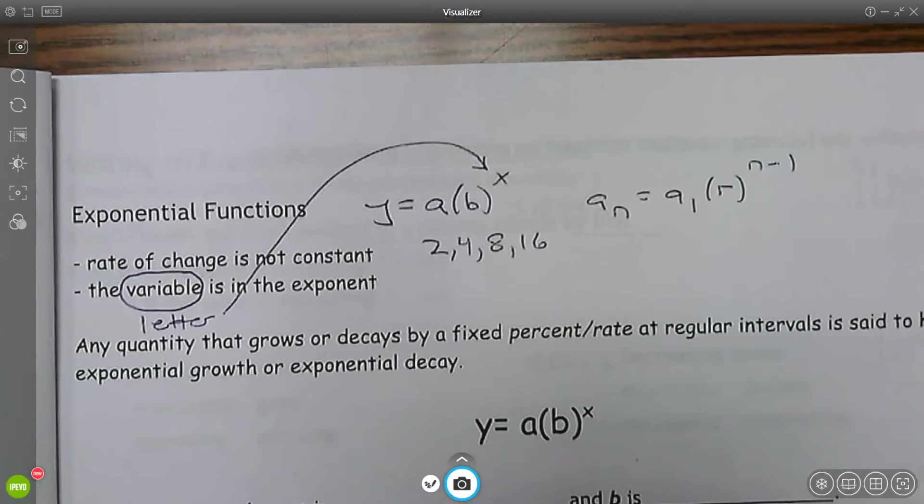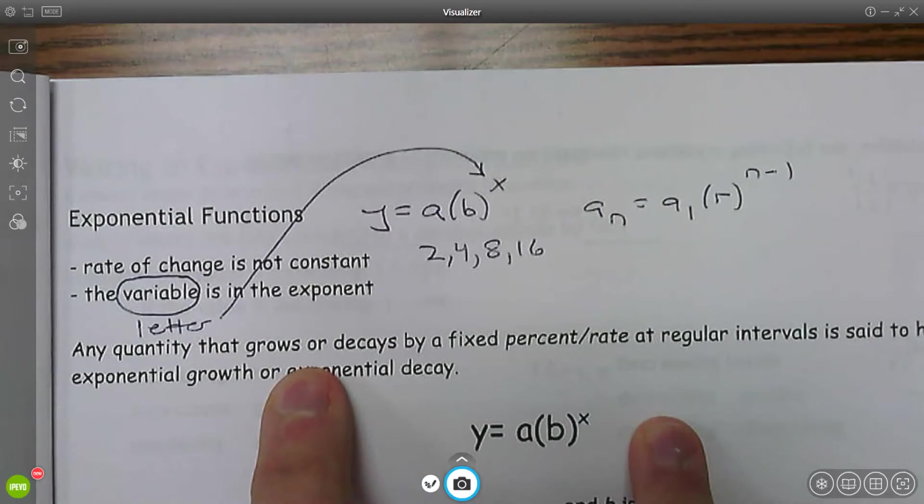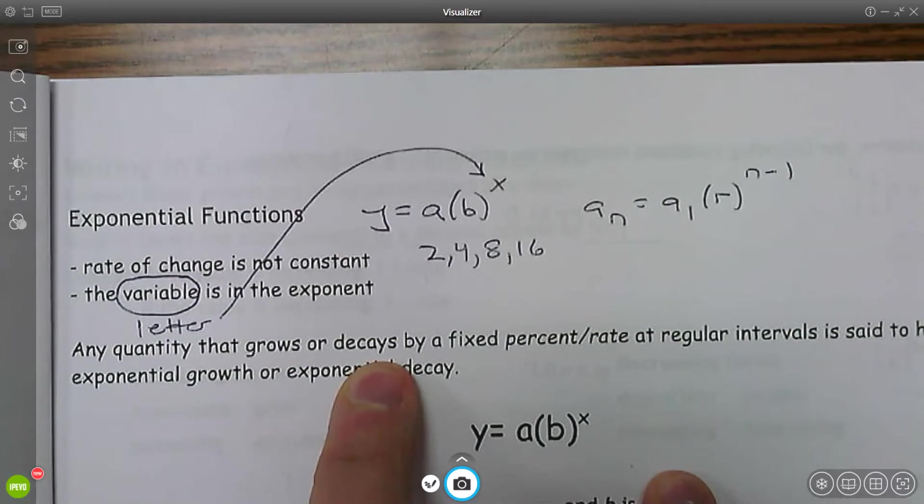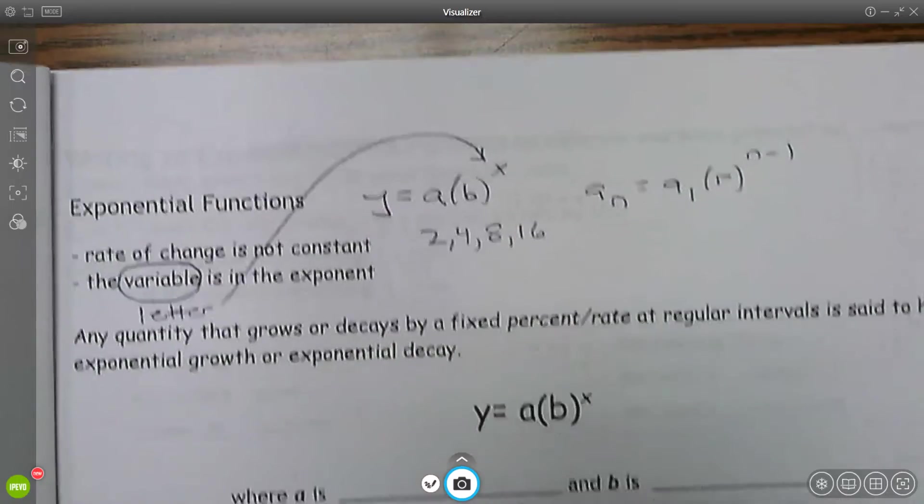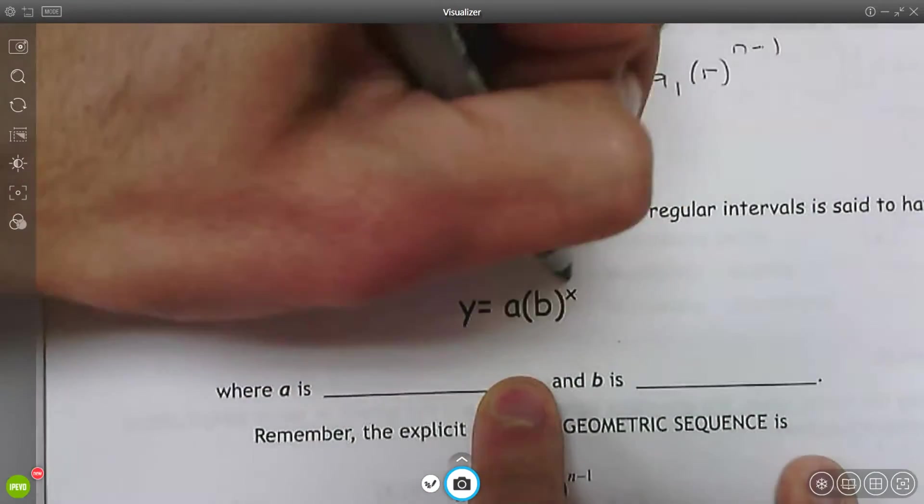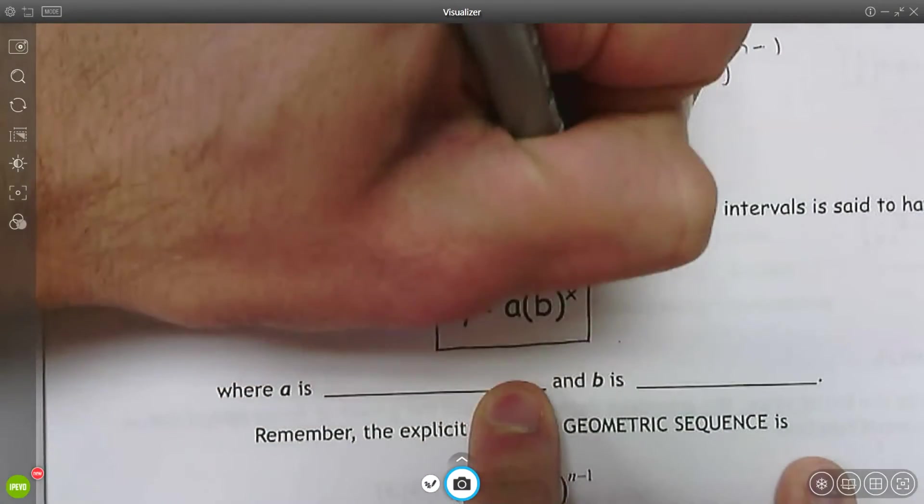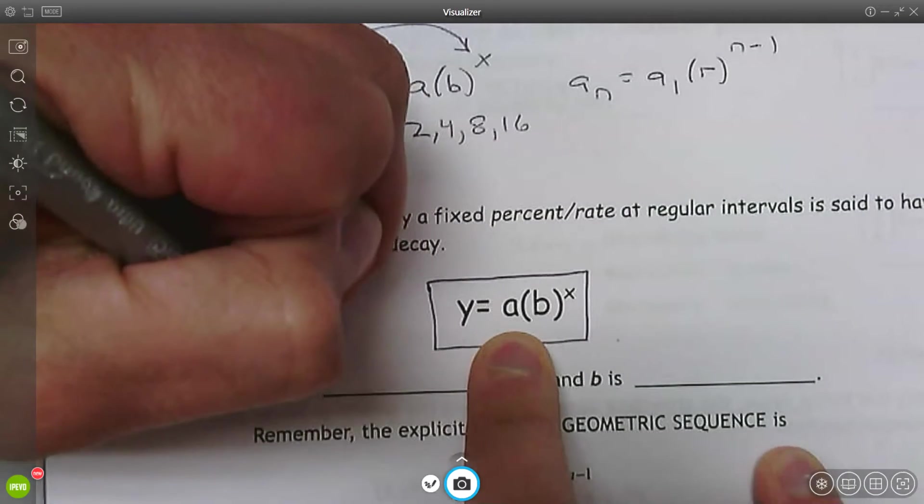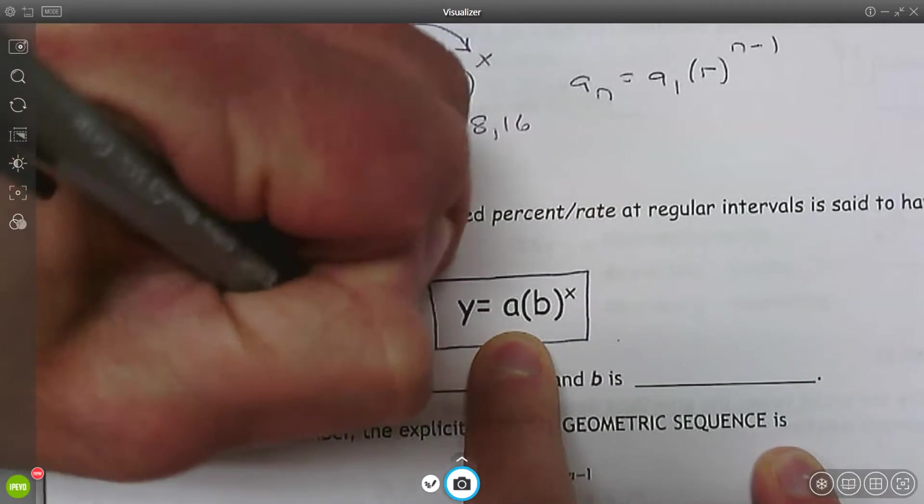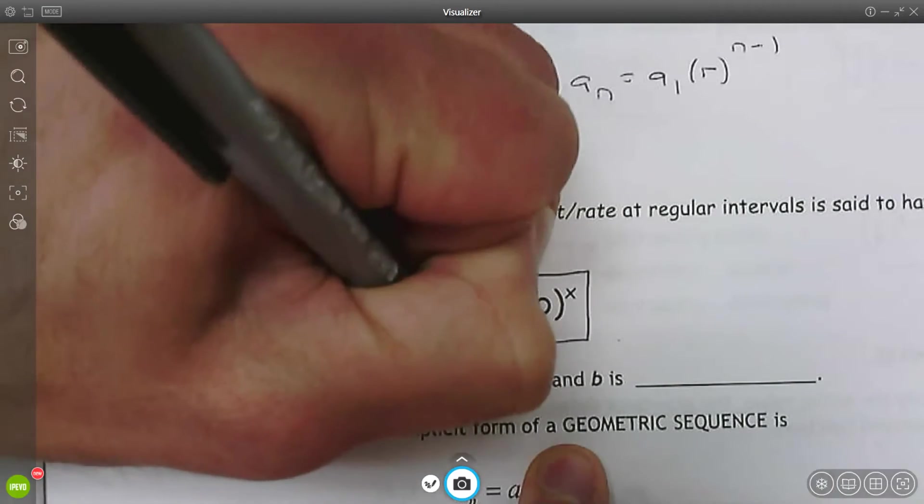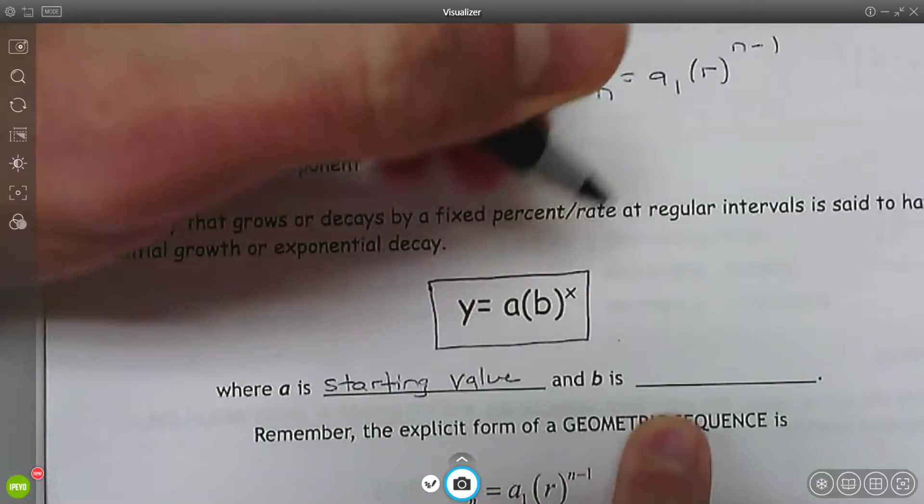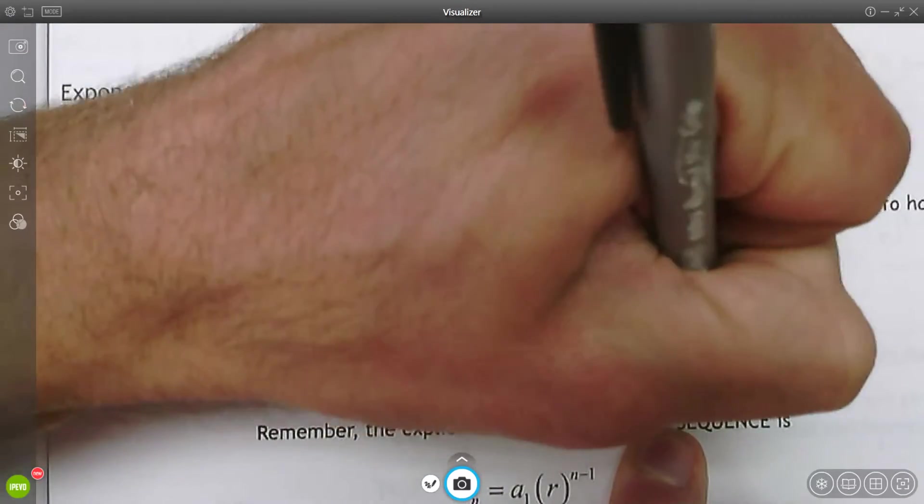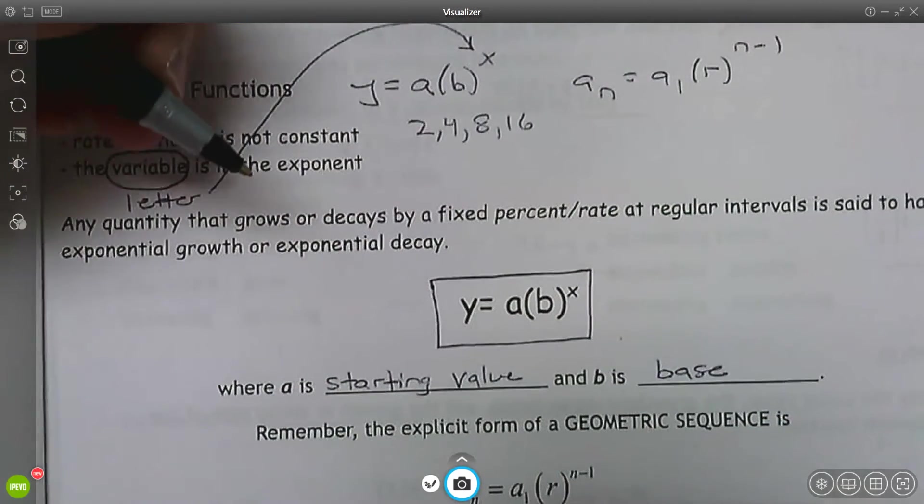There's two different types of exponential functions we're going to investigate: exponential growth and exponential decay. This is the general form for an exponential function. There's two things that we're interested in. A is going to be our initial or our starting value, and B is what we're going to call the base.